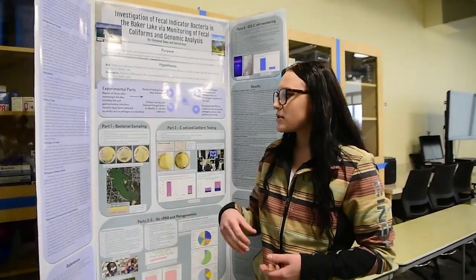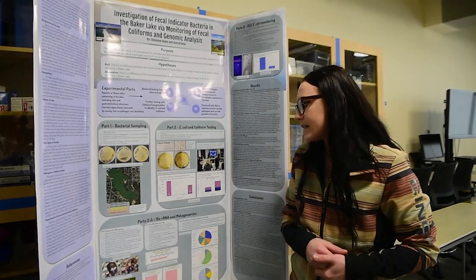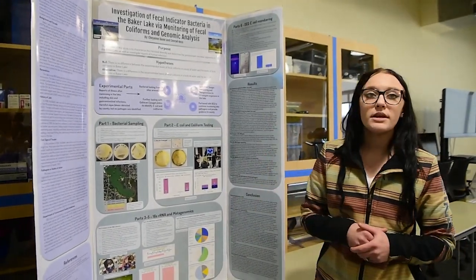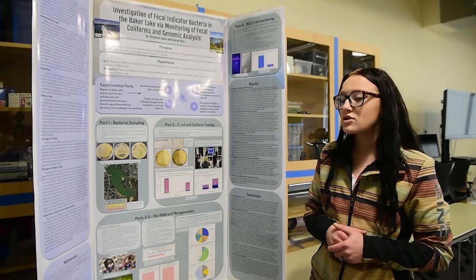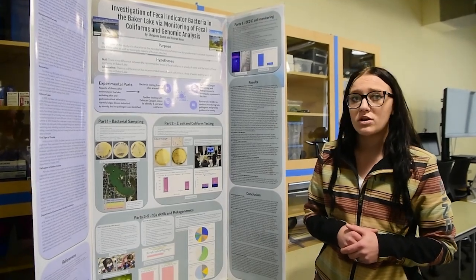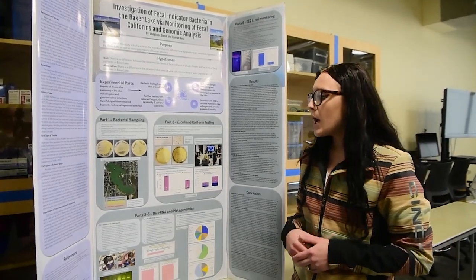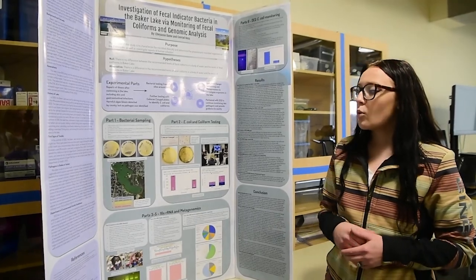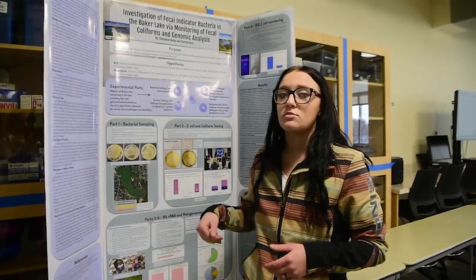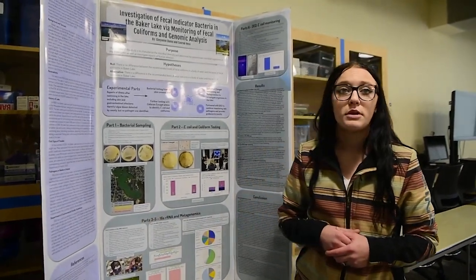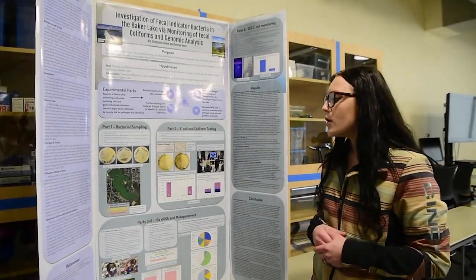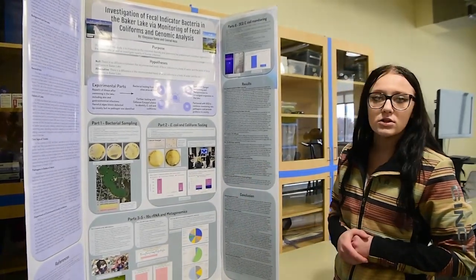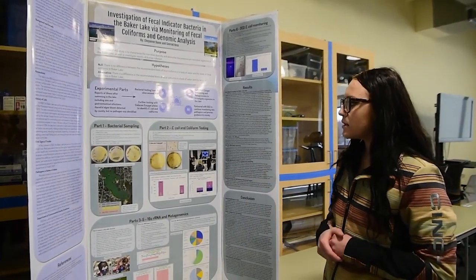For our sampling, the normal state regulations for colonies per milliliter of water is only 126. We are exceeding that level by a large amount — we're seeing 1,000 to 100,000-plus colonies per milliliter of water. Following that, we performed our E. coli and coliform testing.